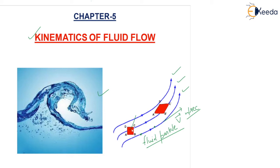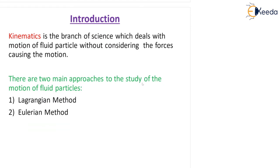ABCD is a fluid particle which is moving in this direction — you can see the arrow marks showing the direction. Kinematics is the branch of science that deals with the motion of the fluid particles without considering the forces causing the motion.